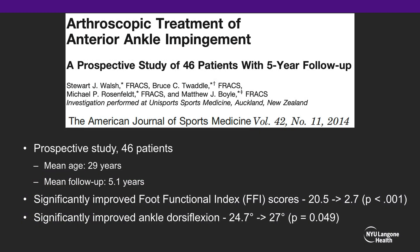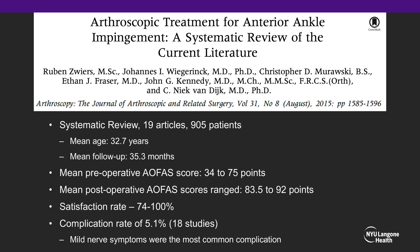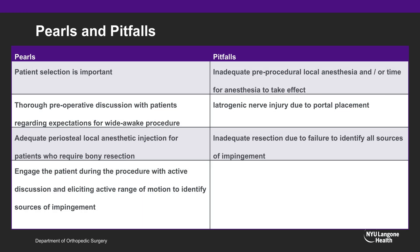Multiple other studies have also reported successful outcomes. In 2014, Walsh et al. reported on a prospective series of 46 patients who underwent ankle arthroscopy and debridement for anterior ankle impingement with minimum five-year follow-up, finding significant improvements in foot functional index scores and ankle dorsiflexion. In 2015, Zwiers et al. published a systematic review including 19 articles and 905 patients with mean follow-up of 35 months, finding that ankle arthroscopy and debridement improved patient-reported outcomes as measured by AOFAS, with high satisfaction rates of 74–100% and a pooled complication rate of 5.1%, most commonly mild nerve symptoms due to portal placement.